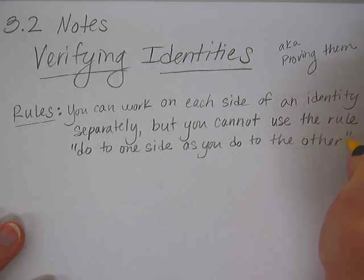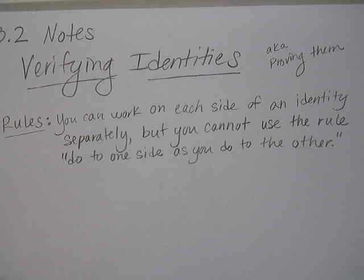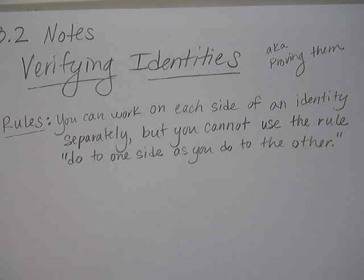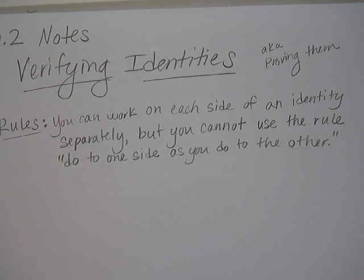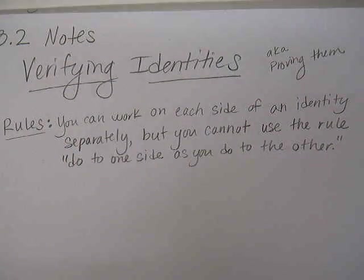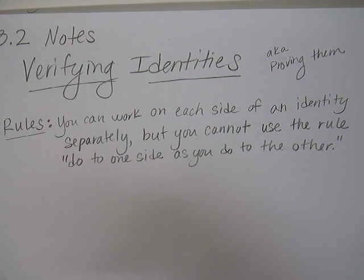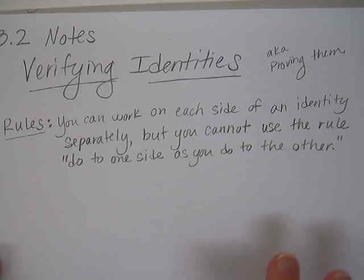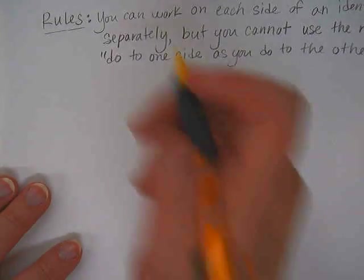Normally when we're solving an actual equation, we can multiply both sides by a number, divide both sides, square root both sides, or something like that. When you're proving identities, you can't do that. You have to stick to one side or the other, or work on both at the same time, and your goal is to make them match, therefore proving that one side really is equal to the other side. It'll make more sense when we do some examples.